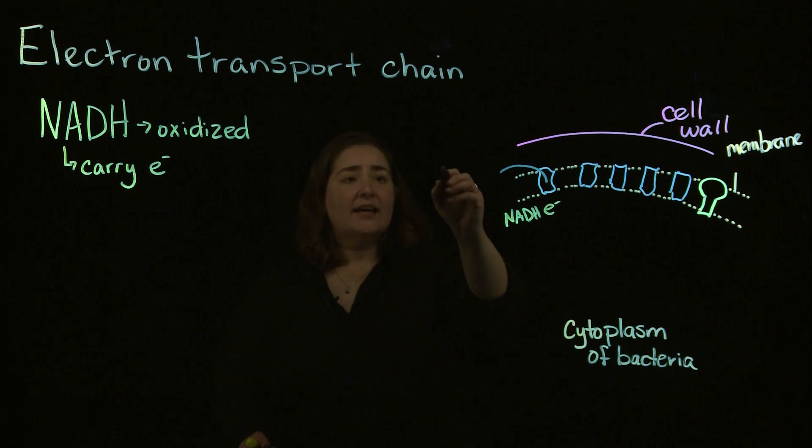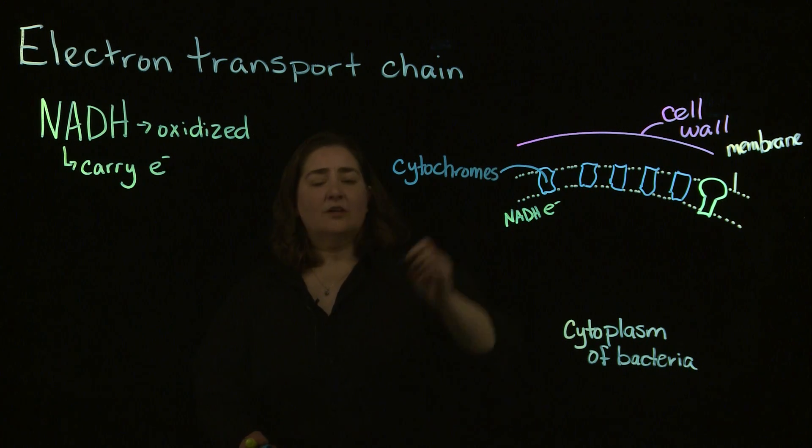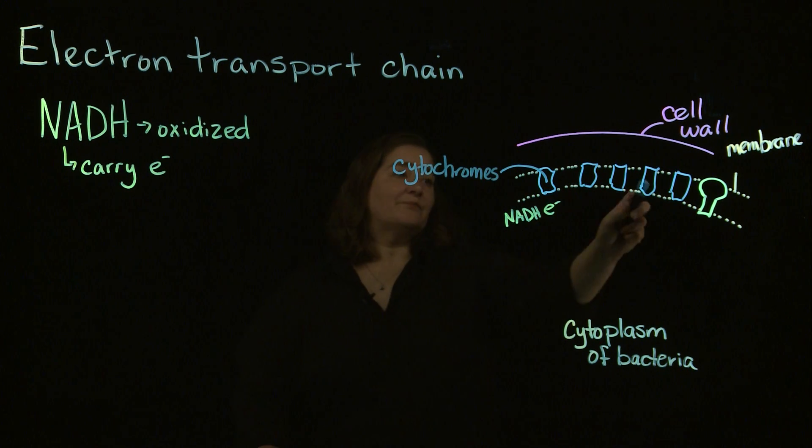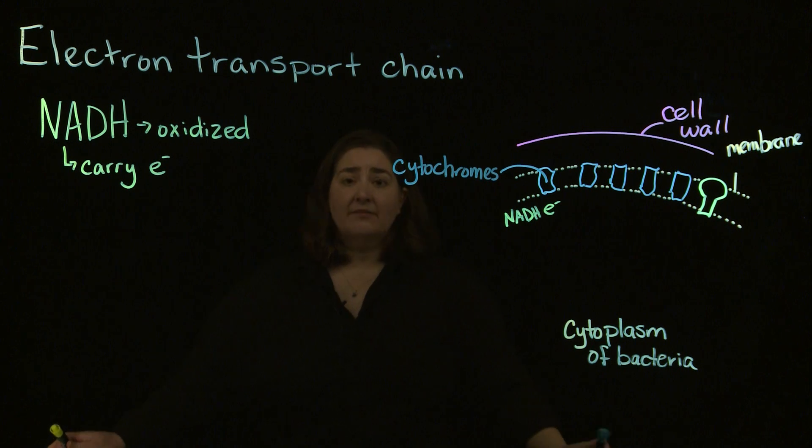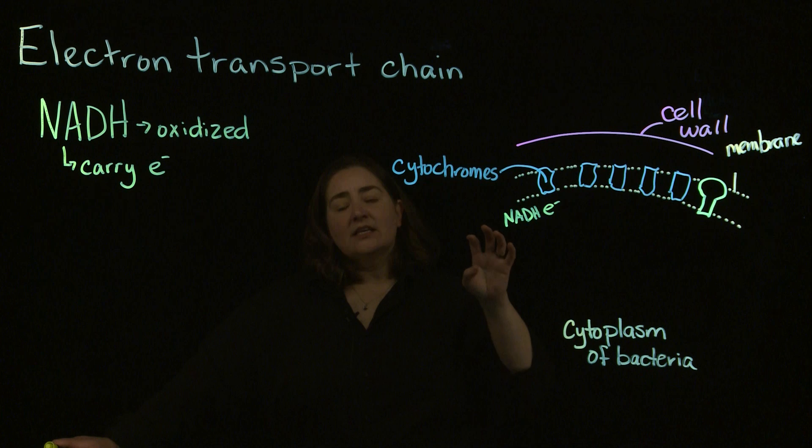So, these blue boxes that I have here, these are cytochromes. Each of the five that I've drawn here have different names. And to be honest, I'm not all that concerned that you know the names of the different cytochromes. But what I do want you to understand is it's those cytochromes now that are going to become important in the process of generating ATP.